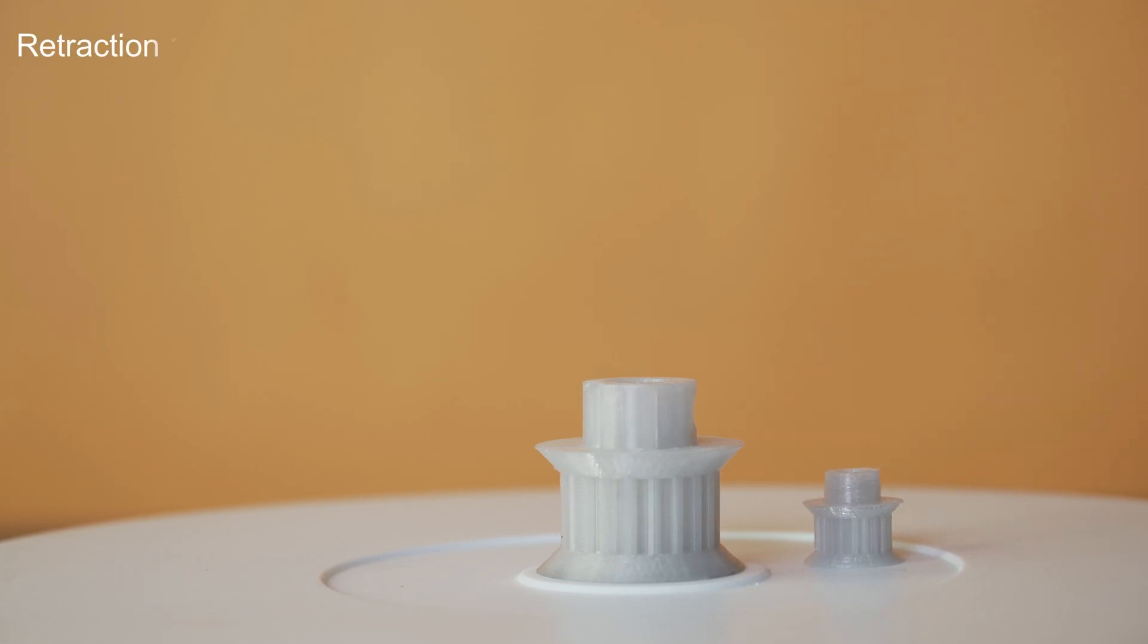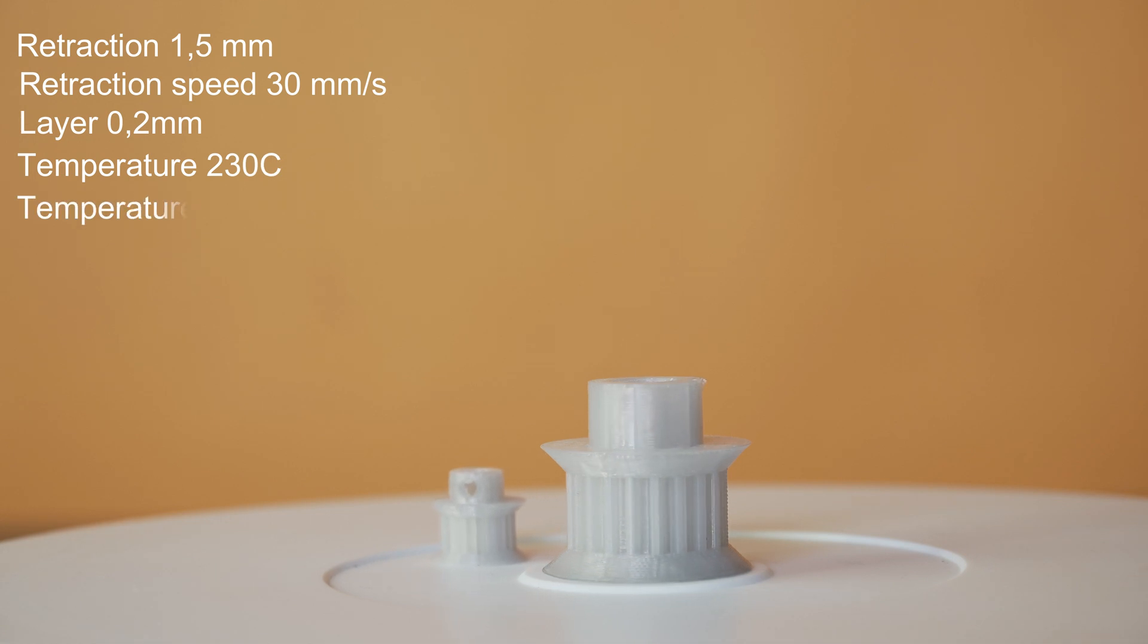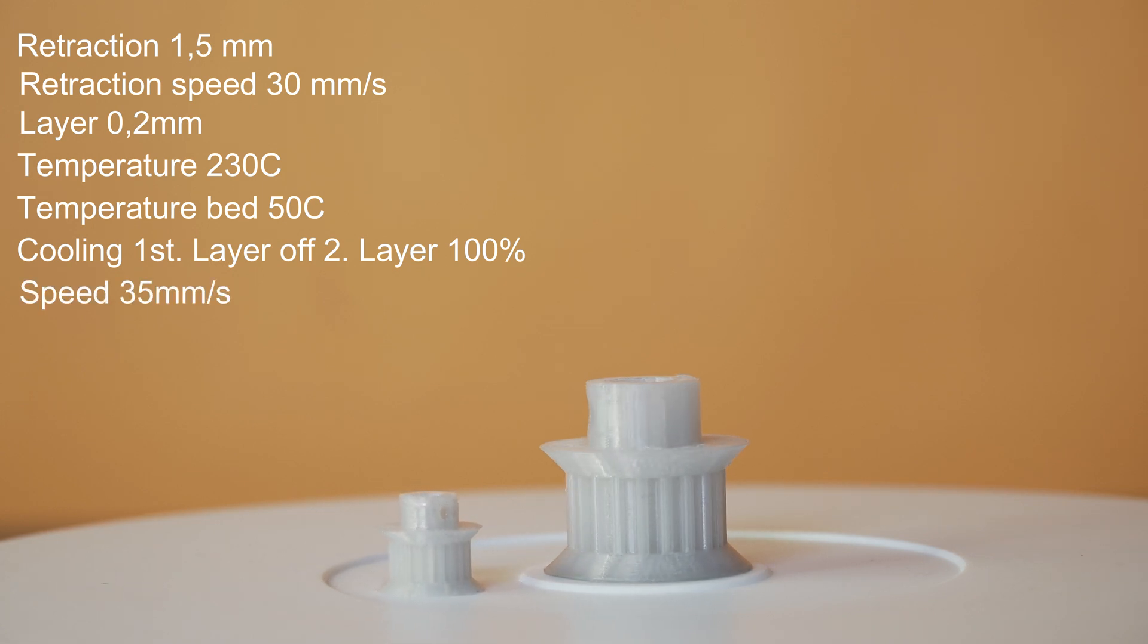Now for the Kung Fu Flex filament. Here I have the retraction set to 1.5 millimeters. And the retraction speed is 30 millimeters per second. The layer height is 0.2 millimeters. I have set the nozzle to 230 degrees. And the bed to 50 degrees. Cooling again. First layer off. Second layer 100%. The print speed here is 35 millimeters per second. I have no problem to go to 40 millimeters I think. And again I want to remind that this flexible filament here has not been post-processed at all. And the stringing you see just inside is very very little.